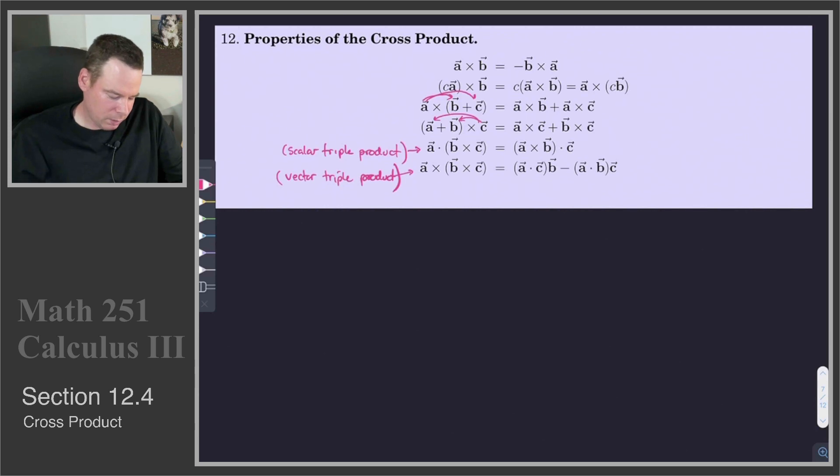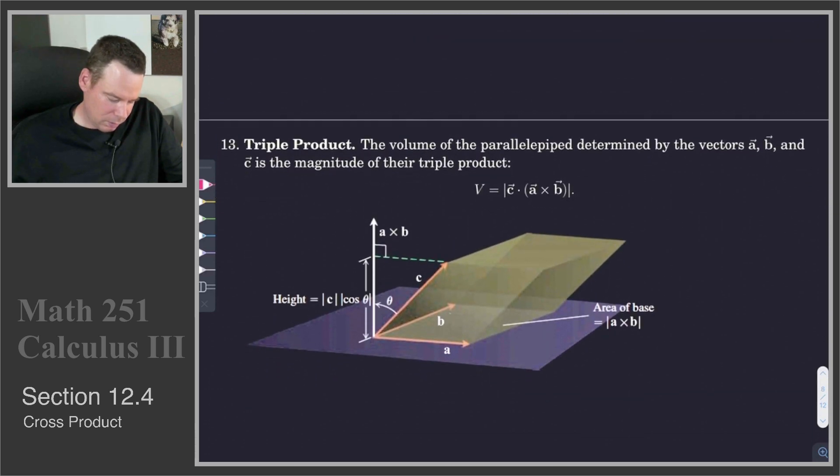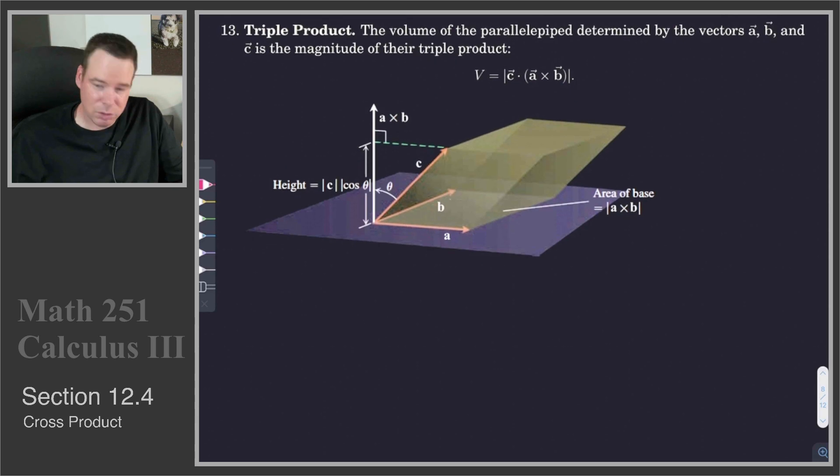Now this scalar triple product, the second one from the bottom of the list, that has a geometric interpretation. The geometric interpretation of that is it actually gives a volume, or the magnitude of it gives a volume.